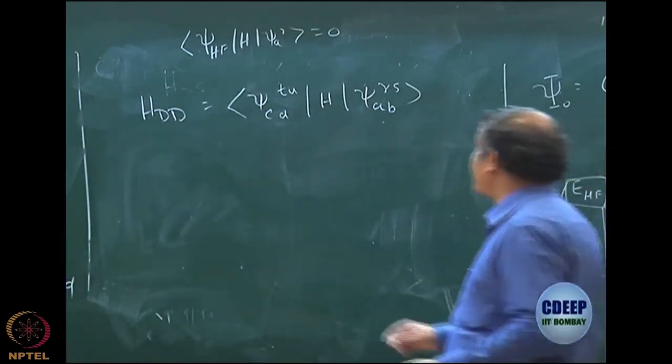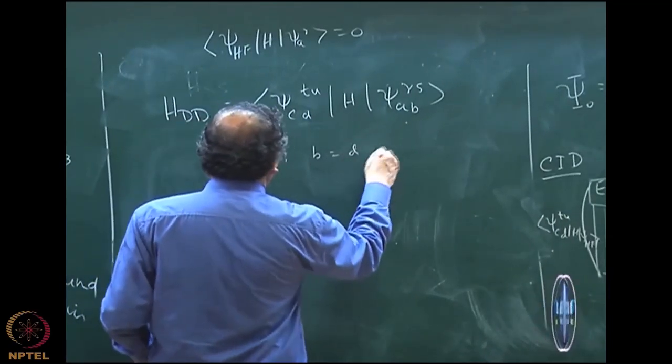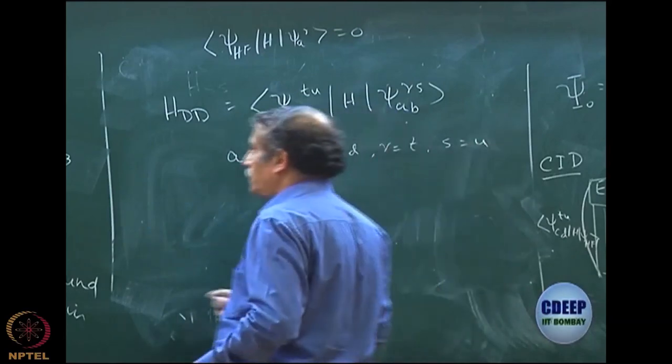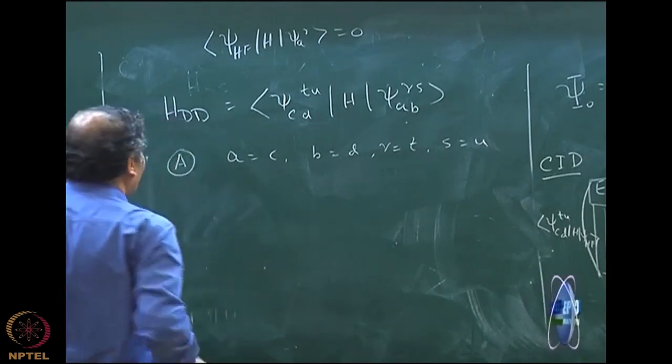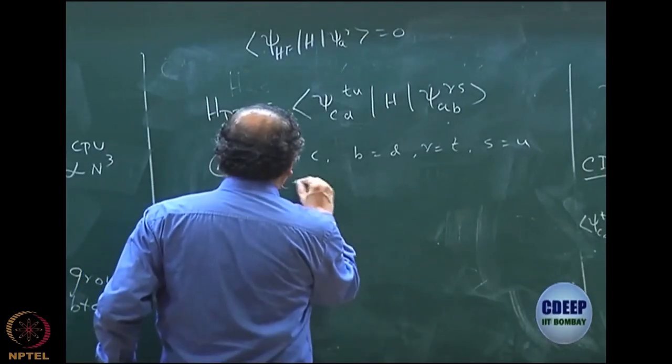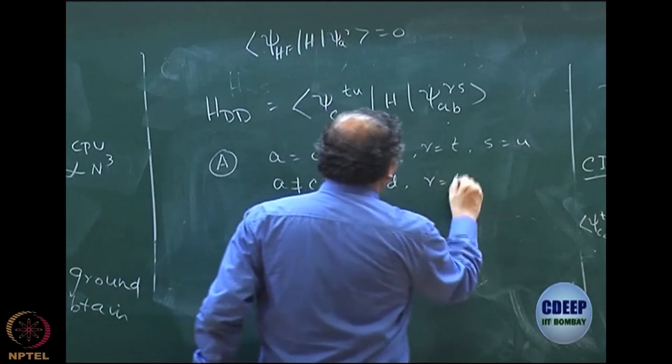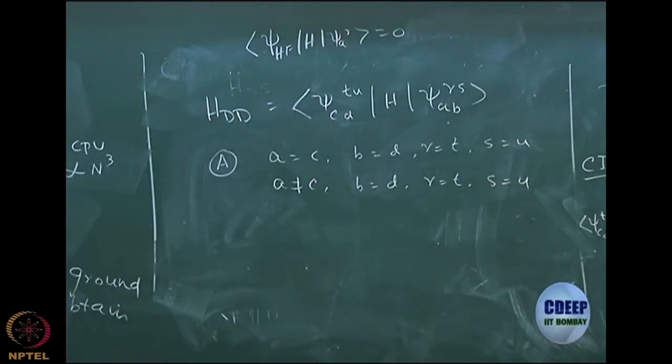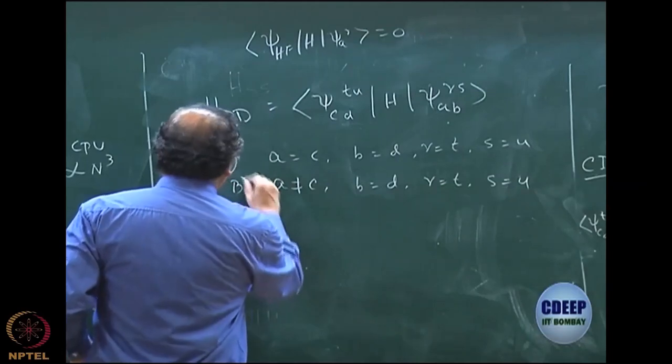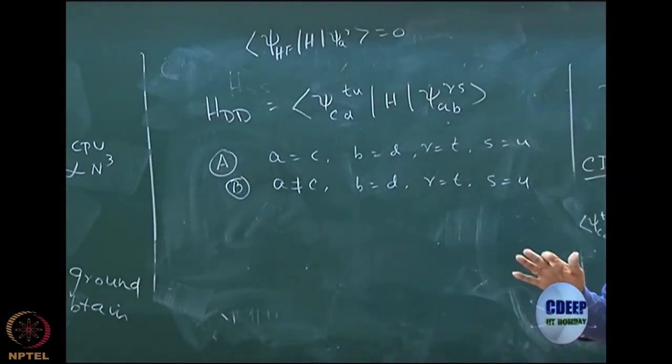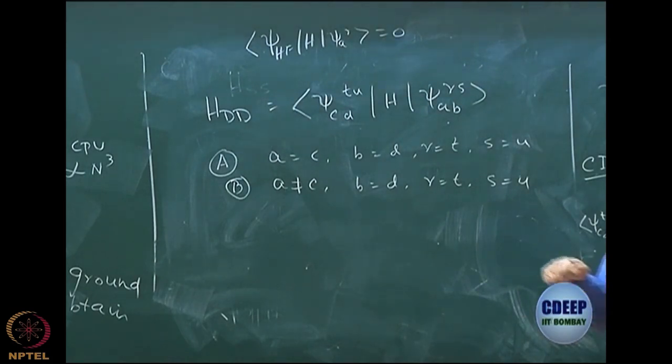Even by Slater rule and lots of integrals will remain of course by Slater rule. So for example, so many possibilities are there. Let us say A equal to C, B equal to D, R equal to T, S equal to U. So I have two doubly excited determinants with respect to Hartree-Fock, but they are same. Which rule you will apply? First rule, rule A, let us say rule A. I can keep on changing. Maybe A is not equal to C, but B equal to D, R equal to T, S equal to U. Which rule you will apply? Rule B. A is not equal to C, but B is equal to T. Everything else is equal. So rule B, only one occupancy difference.